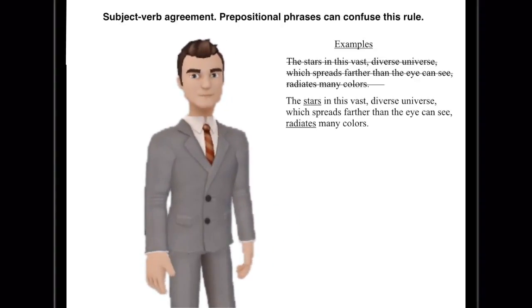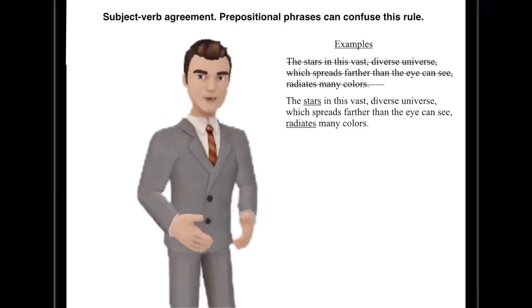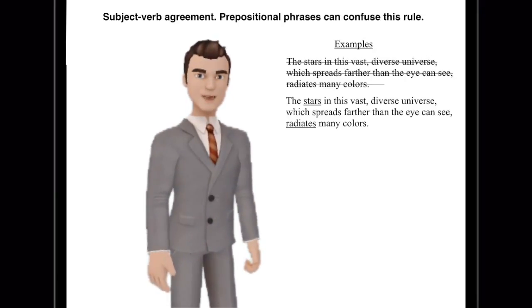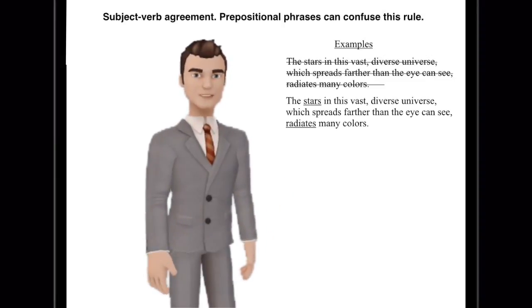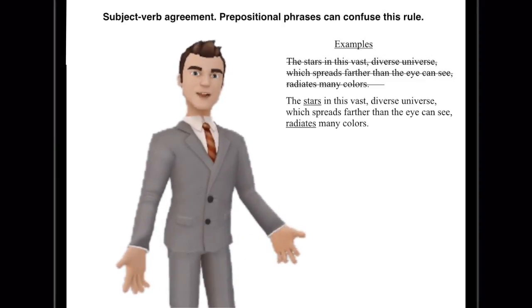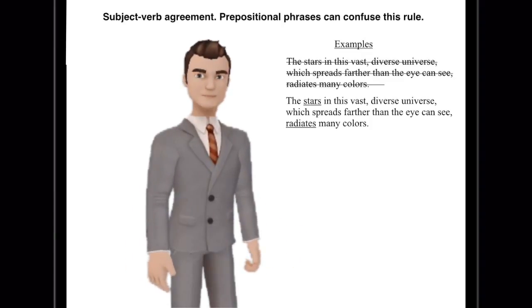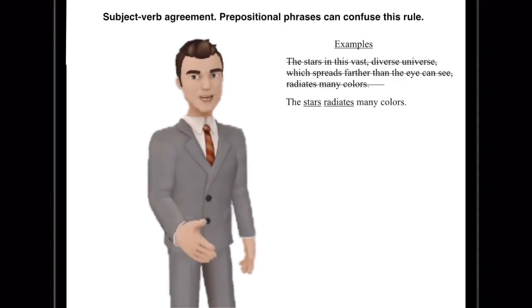So, by first glance, it looks okay. But, what we need to look at is the subject. The subject is stars, and then we need to match that with its verb. In this case, the verb is radiates, and stars radiates doesn't go together.